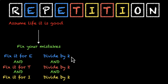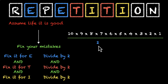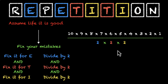Repetition has ten letters. So if life is good, we have 10 × 9 × 8 × 7 × 6 × 5 × 4 × 3 × 2 × 1 ways. Now let's add the corrections: fix for E — divide by 2; fix for T — divide by 2; fix for I — divide by 2. Whatever we get out of here is the total number of ways to rearrange the letters of the word repetition.